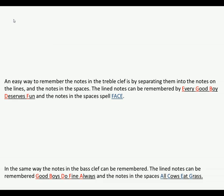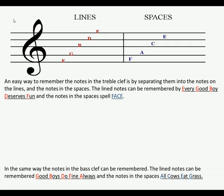We have to really try hard to remember all these notes, and an easy way is to separate them into notes on the lines and notes in the spaces. The line notes in the treble clef can be remembered by 'Every Good Boy Deserves Fun,' and the notes in the spaces spell 'FACE.' The line notes are E, G, B, D, and F — Every Good Boy Deserves Fun — and in the spaces: F, A, C, E — face.